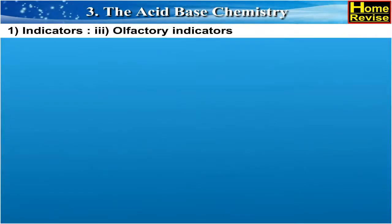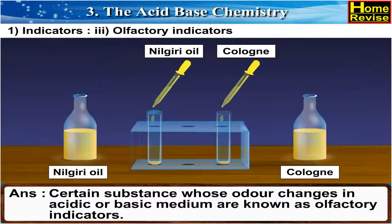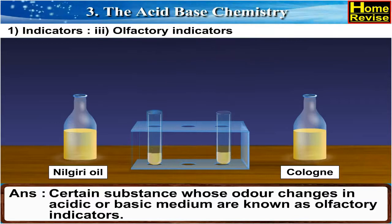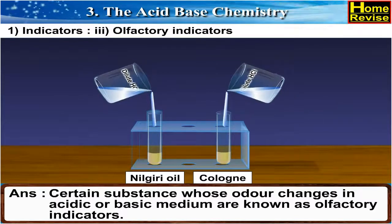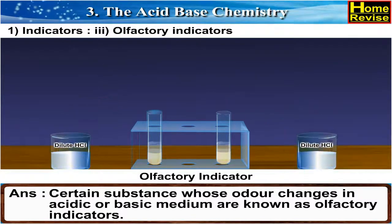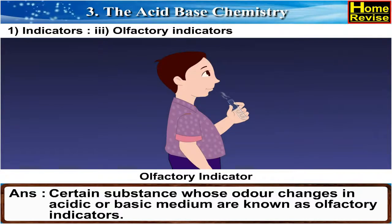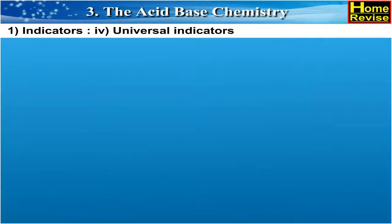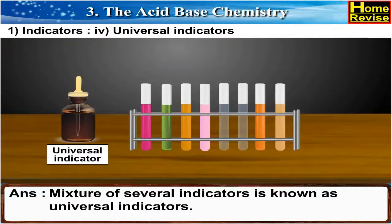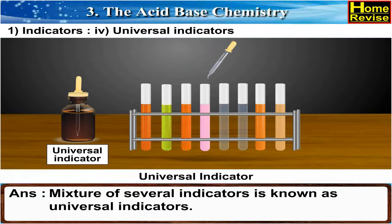Third, olfactory indicators: Certain substances whose odour changes in acidic or basic medium are known as olfactory indicators. Fourth, universal indicators: A mixture of several indicators is known as universal indicators.